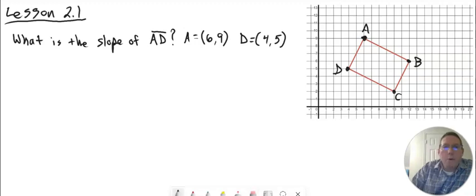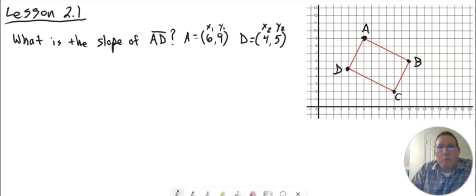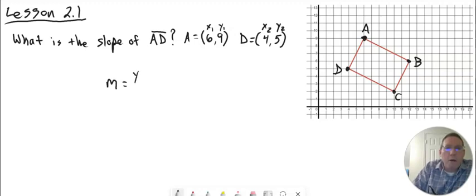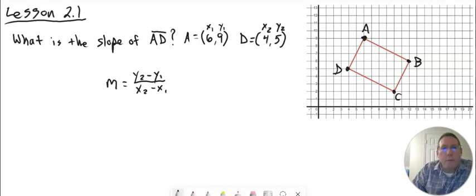Now, going on to step 2, we want to consider that these coordinates — we're going to call 6 X1, and 9 Y1. For D, we're going to call 4 X2, and 5 Y2. So we have X1 and Y1 for point A, and X2 and Y2 for point D. We're going to use the slope formula, which is Y2 minus Y1 over X2 minus X1. Remember that the Y values always go in the numerator and the X values always go in the denominator — don't mix that up.